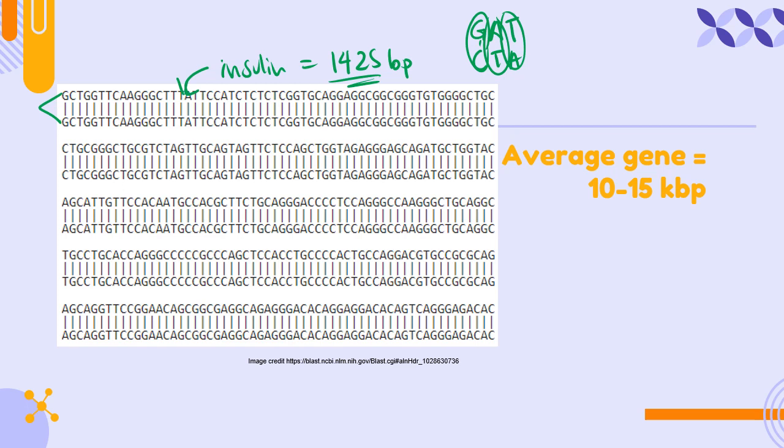Human insulin is over a thousand base pairs long, but insulin is actually a pretty small gene. The average human gene is 10 to 15 kilobase pairs long—that kilo is a thousand. So the average gene in humans is 10,000 to 15,000 base pairs long. That's crazy.